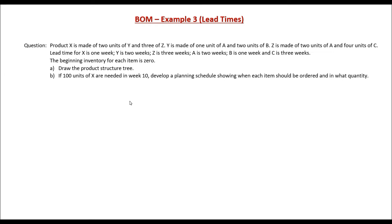Welcome to the video on Bill of Material Example 3. In this video we will learn how to identify when components of a bill of material should be ordered, in what quantity, and how to utilize the quantities and lead times in a BOM structure. Product X is made of 2 units of Y and 3 units of Z. Y is made of 1 unit of A and 2 units of B. Z is made of 2 units of A and 4 units of C. Lead time for X is 1 week, Y is 2 weeks, Z is 3 weeks, A is 2 weeks, B is 1 week, and C is 3 weeks. Beginning inventory for each item is 0.